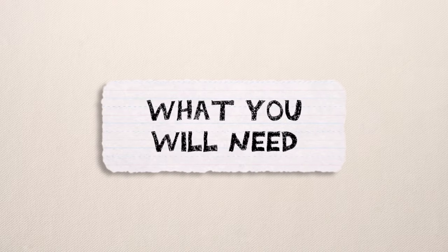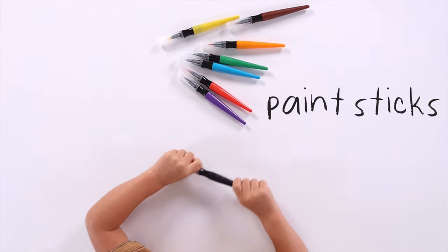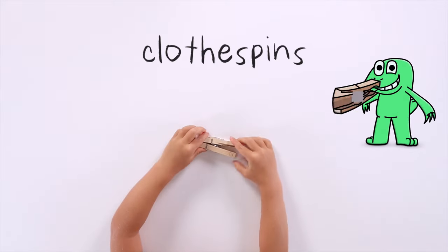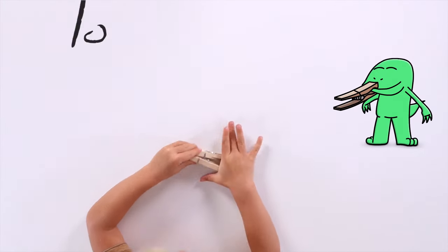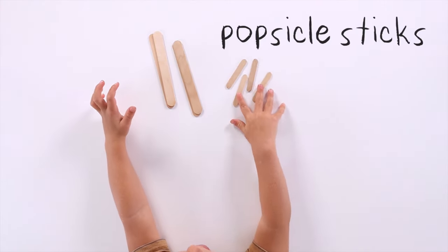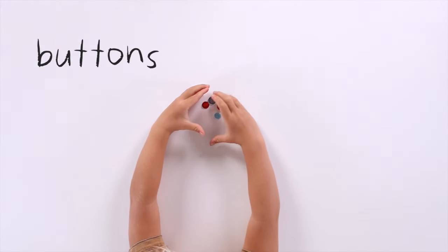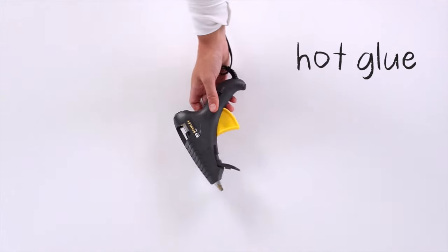Here's what I'm going to make: paint sticks, clothespins, popsicle sticks big and small, buttons, and hot glue.